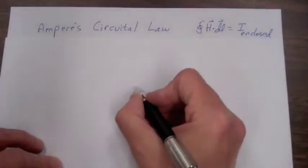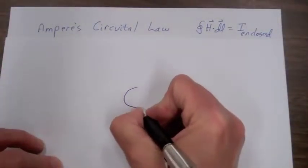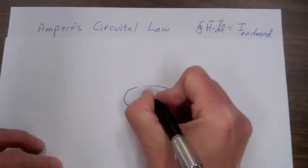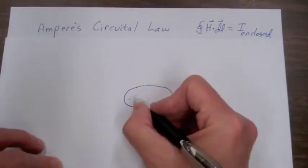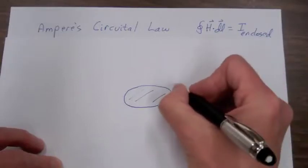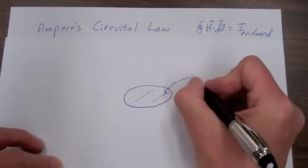Let's consider a small closed path. And the surface area of this path is going to be delta S.